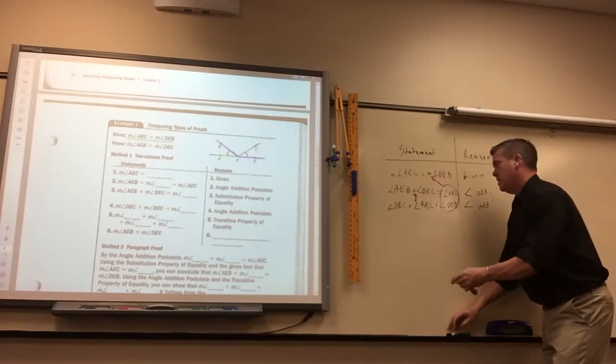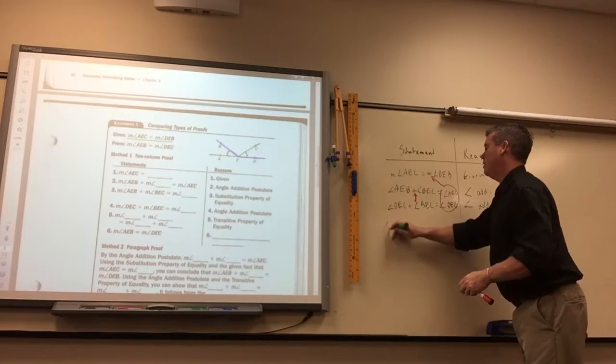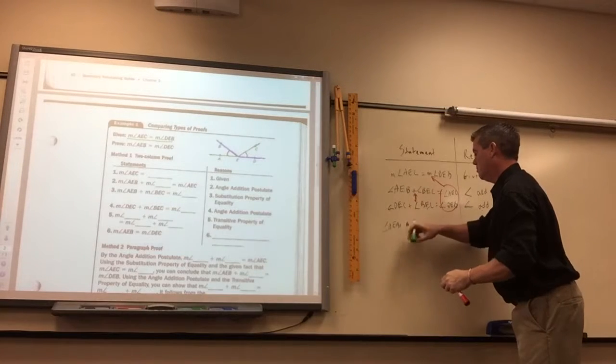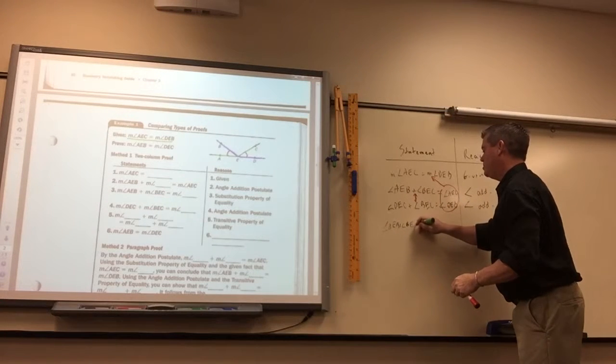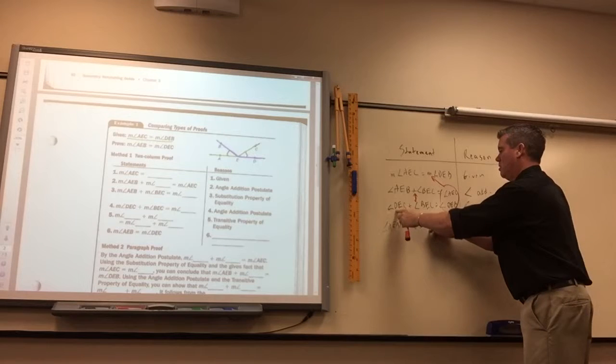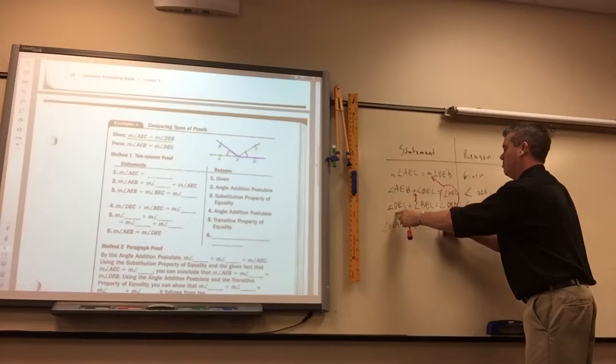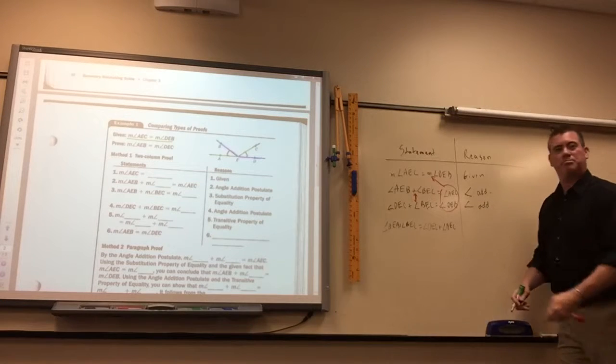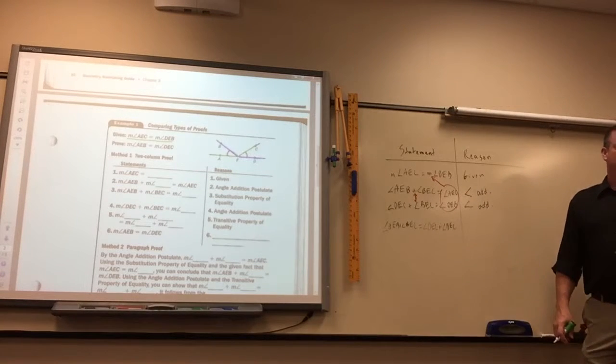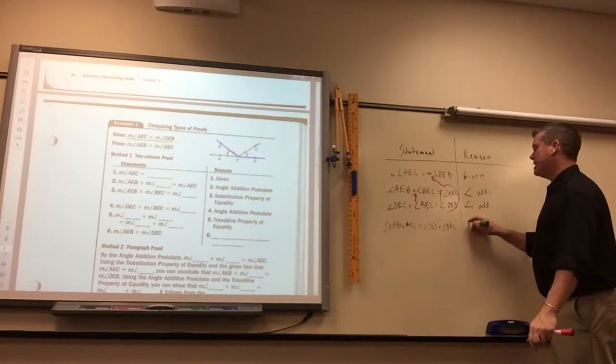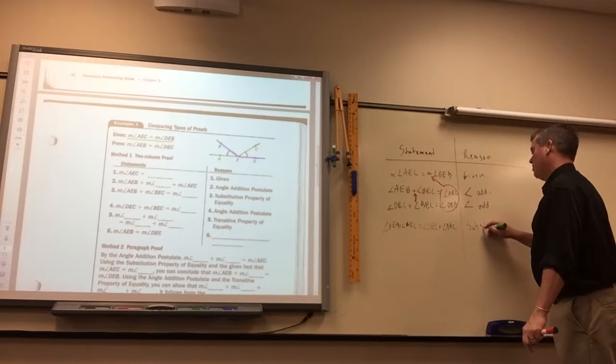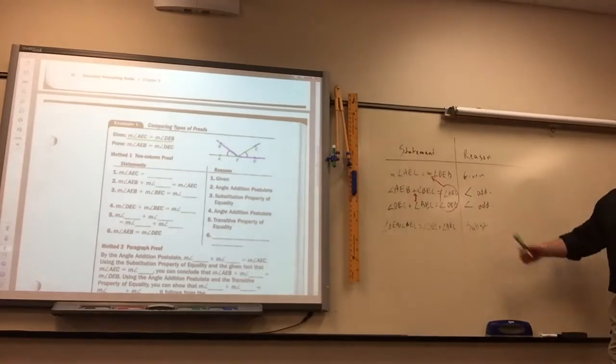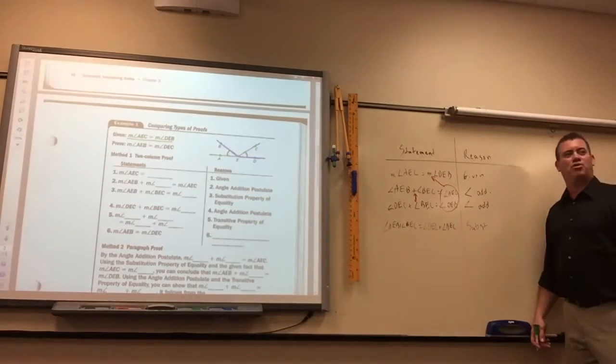So, we write that in there, angle AEB plus BEC equals angle DEC plus BEC. And what property would I put for a reason? Substitution. When in doubt, if you had to guess at a reason and you didn't know what to put, put substitution. Because a lot of times that will be correct.